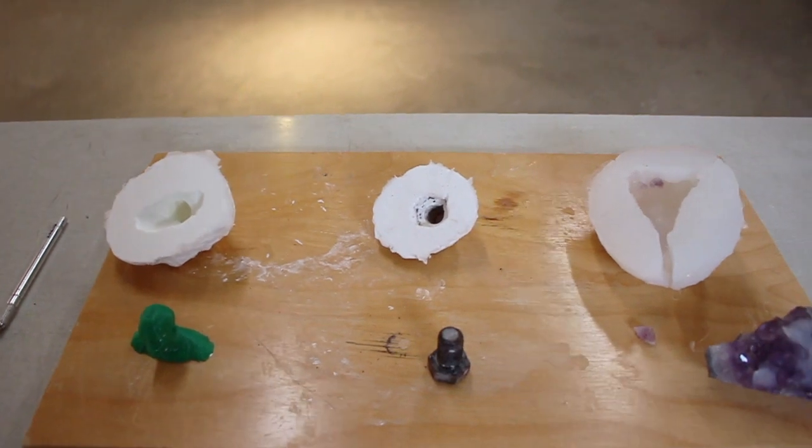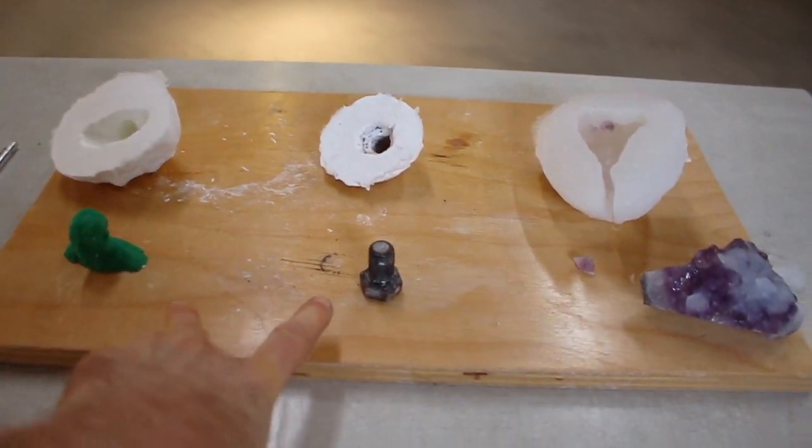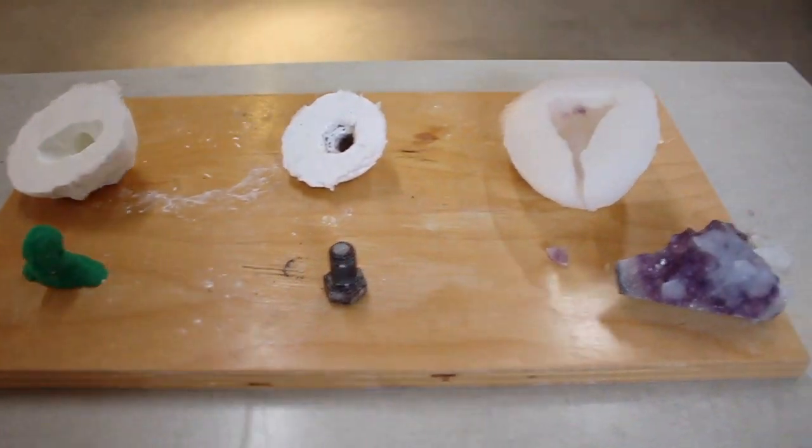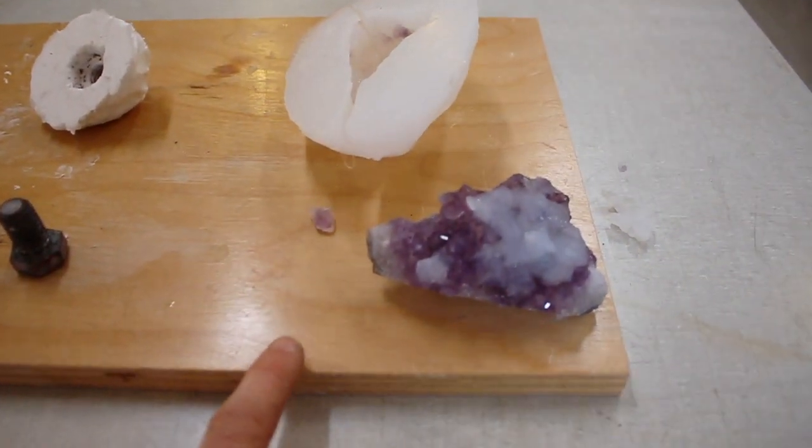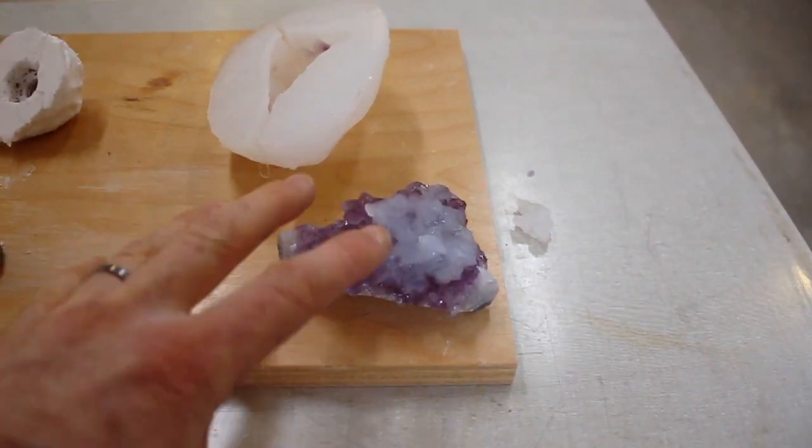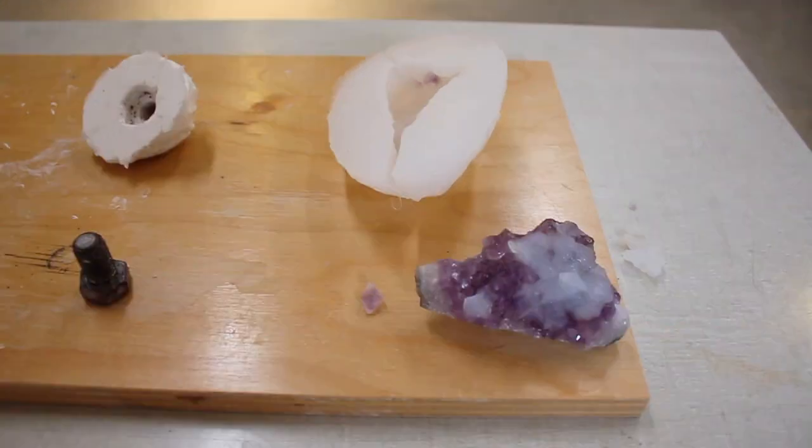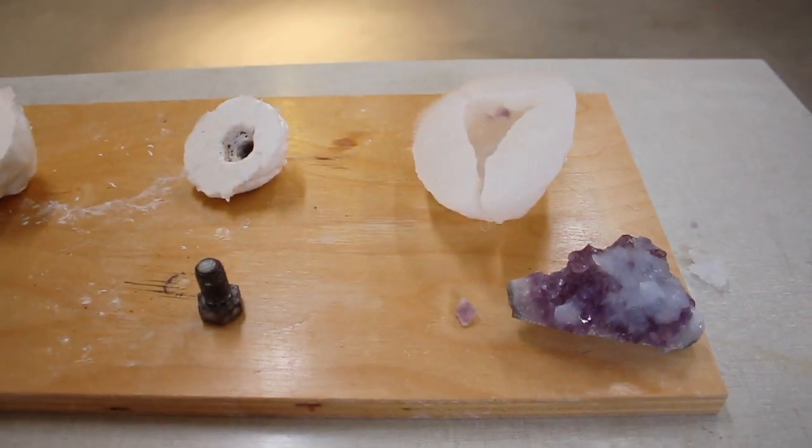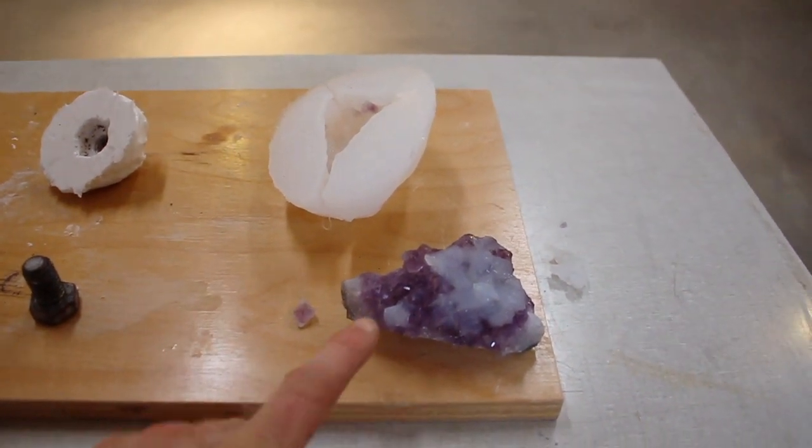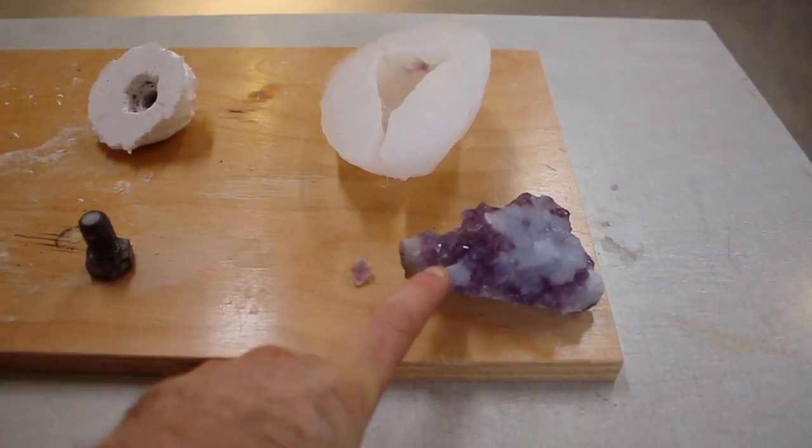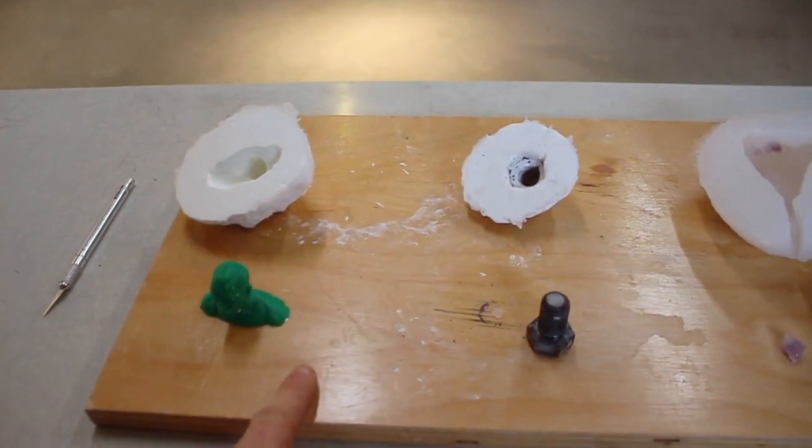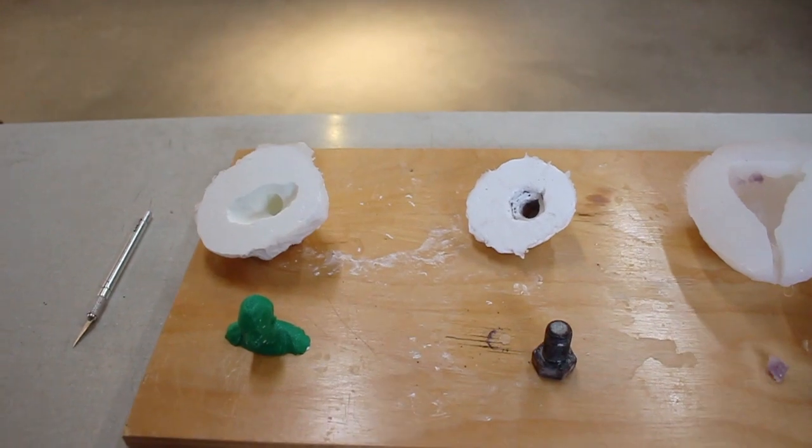All right so here are the three molds. You can see these two on the left worked out really well, the face and the bolt, and they came out really cleanly. The crystal just did not come out cleanly. It just has so many facets and textured bits and ridges and things it just got stuck in the mold. It's important to choose the right kind of object for this. I don't think everything is castable using silicone just because you could have so much surface area like in this case that it just doesn't work out. The next thing we're going to do is do a plaster pour in one or two of these molds and see how it turns out.